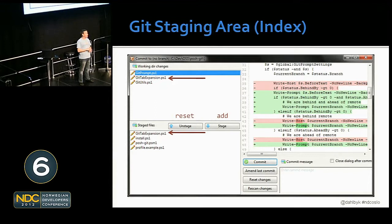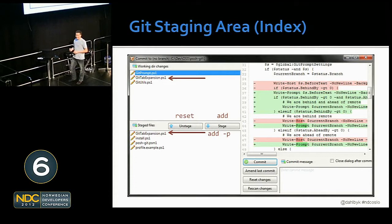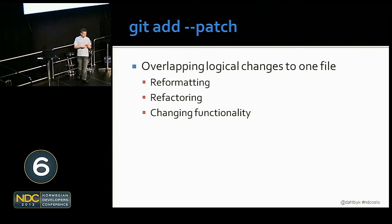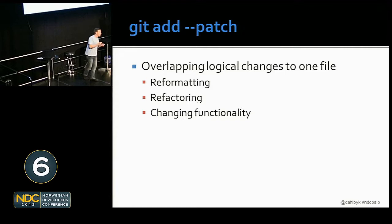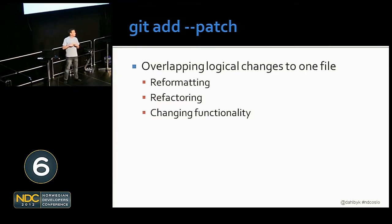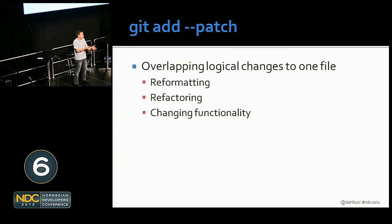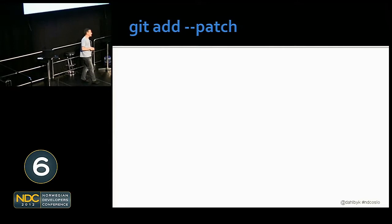Why is the index useful? You can have a file both ready to be committed and not ready to be committed. That's add -p. `git add -p` allows you to handle overlapping logical changes to one file. Suppose you've been reformatting and refactoring and also adding new functionality — I do not like new functionality baked in with reformatting. If something breaks, I want to be able to tell: is it the reformatting or the new functionality? And especially with bisect, you want to be able to pinpoint a specific commit where something broke — the bigger your commits, the less useful bisect is.